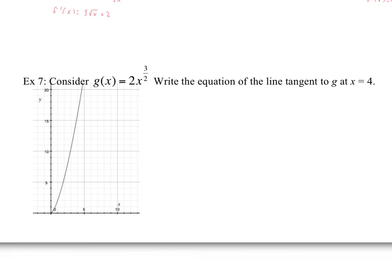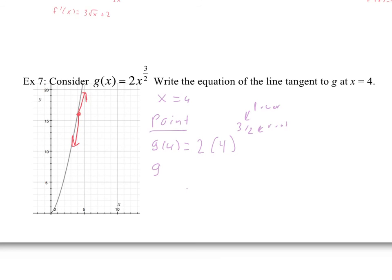Write the equation of the line tangent to g at x equals 4. Again, I need a point and a slope. g of 4 equals 2 times 4 to the 3 halves. For fractional exponents, the denominator is the root and the numerator is the power. So the square root of 4 is 2, and 2 to the third is 8. Therefore g of 4 equals 2 times 8, which is 16. We can confirm this from the graph. So the point is (4, 16).